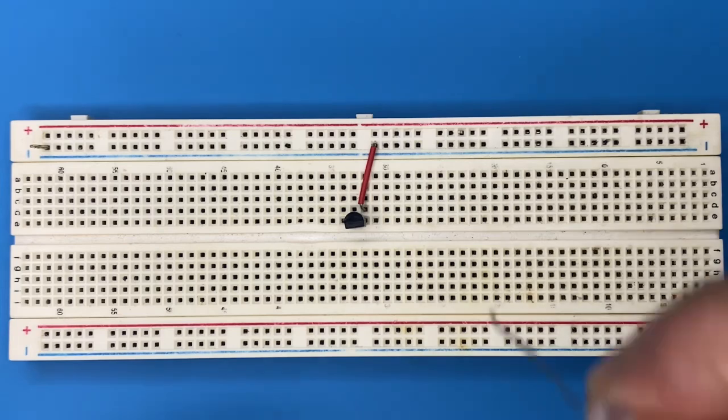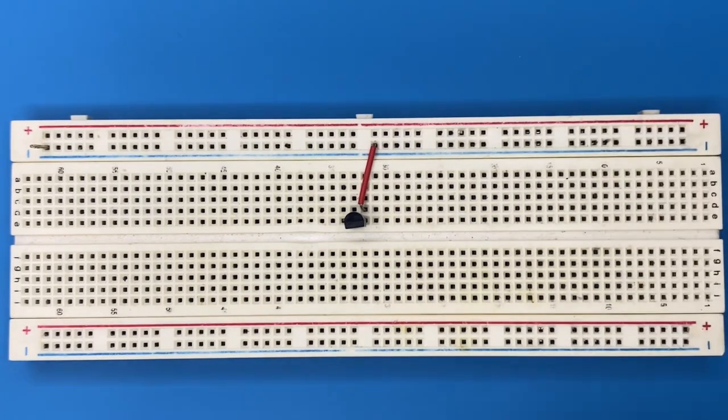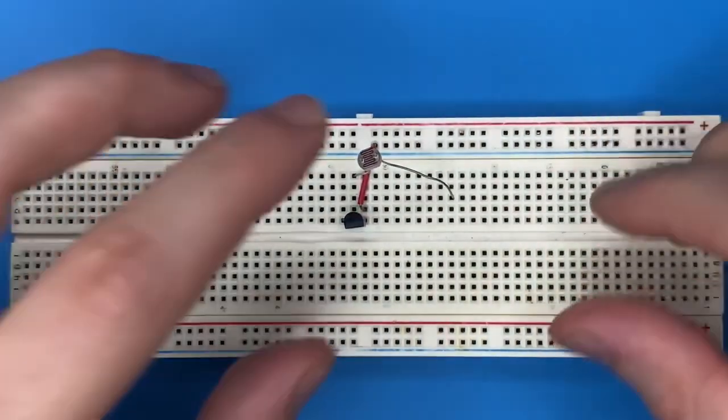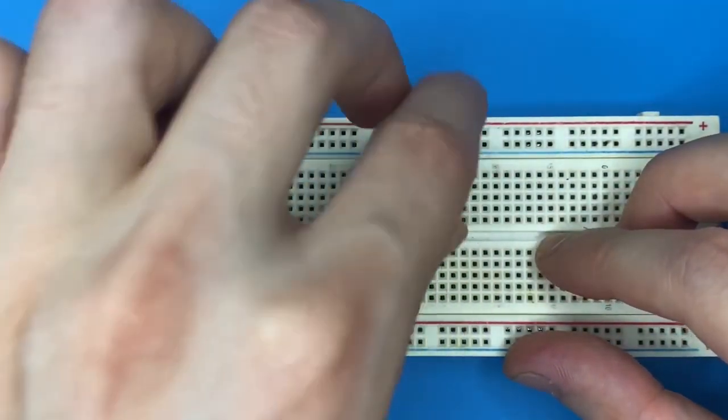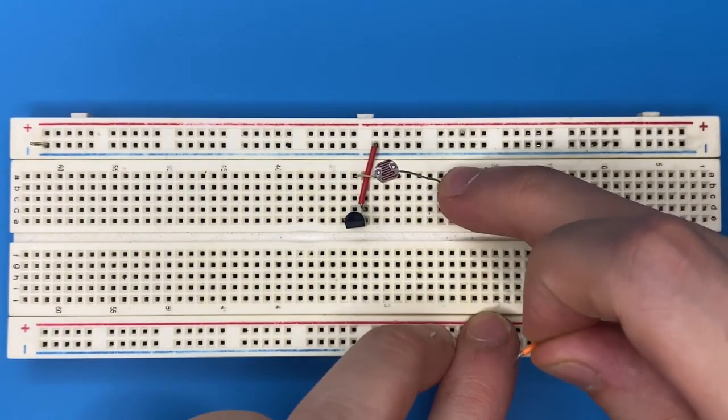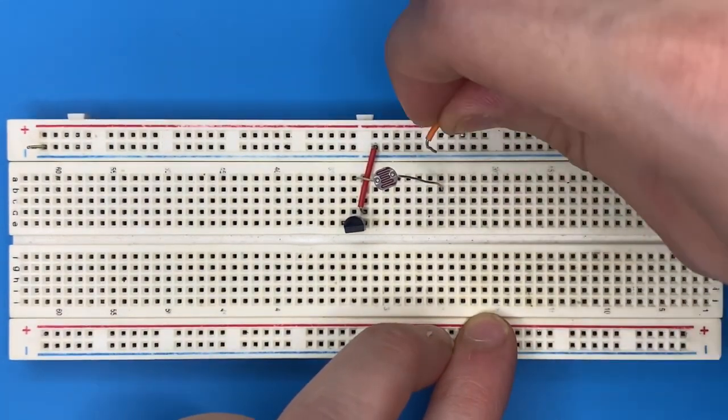Now grab the light dependent resistor and connect it to the base of the transistor and to a blank spot on the breadboard. Connect the other end of the LDR to the positive rail.